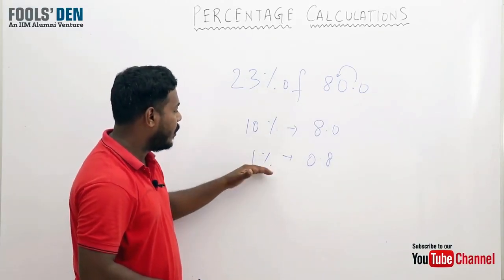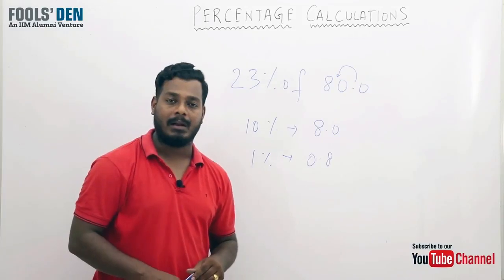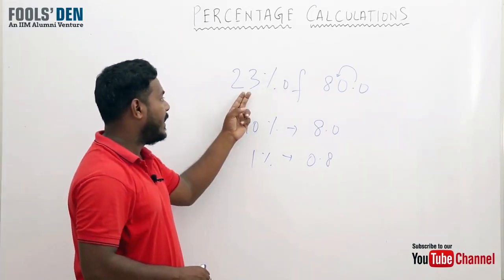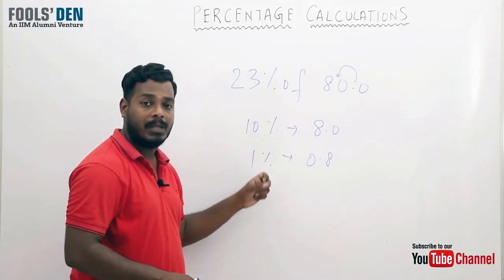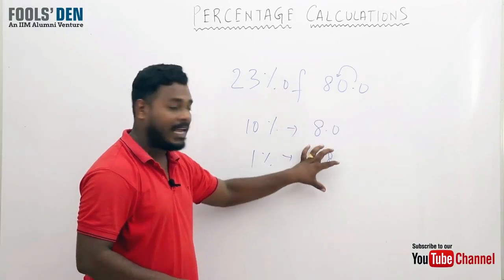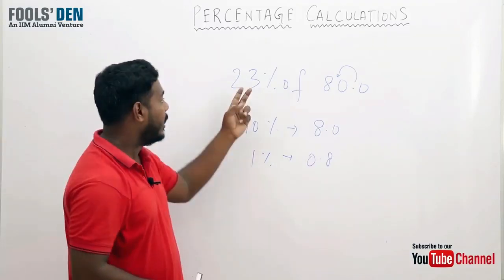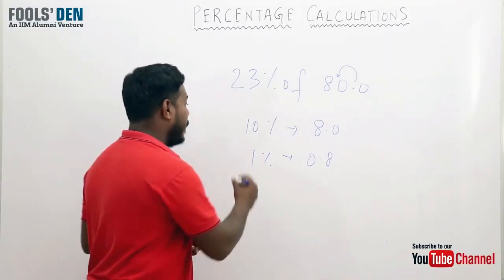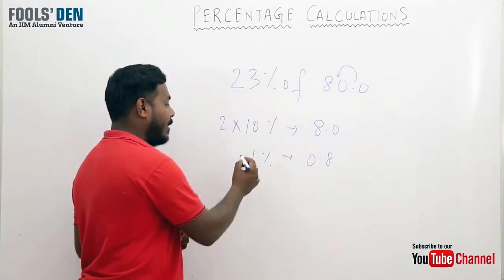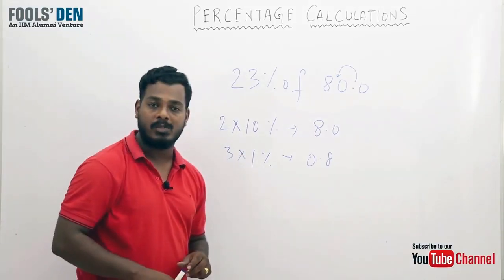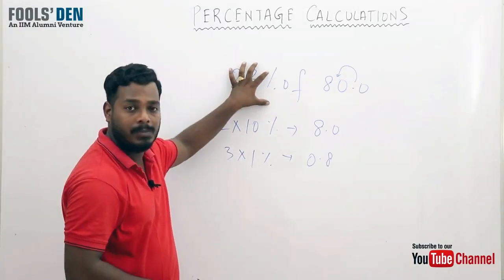Now, once we have 10 percent and 1 percent in place, how to make 23? Let's take it in a practical manner. Suppose you need to pay me 23 rupees, and you have 10-rupee notes and 1-rupee coins. How many 10-rupee notes and 1-rupee coins will you give me to make 23 rupees? I think you can figure out - if we take two 10-rupee notes, that's 20 rupees, and three 1-rupee coins, that's 3 rupees. So two tens and three ones make 23 rupees.